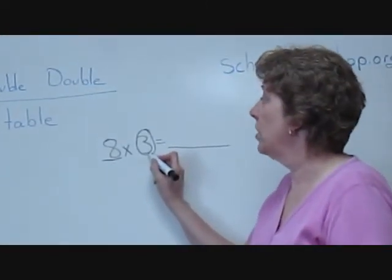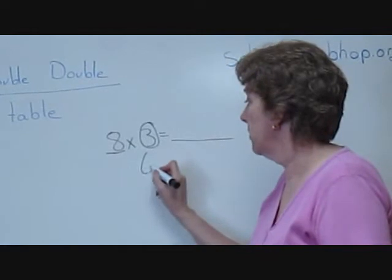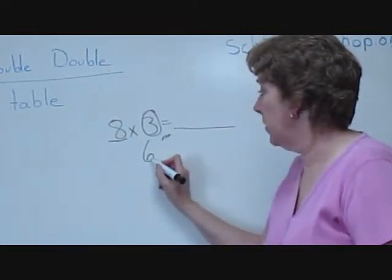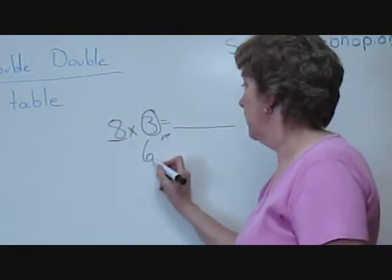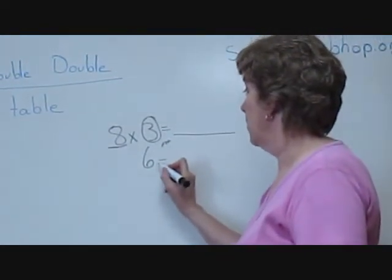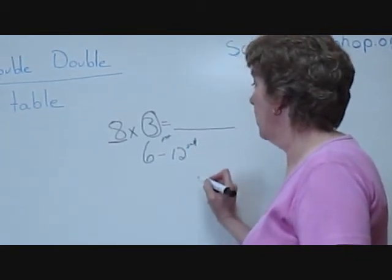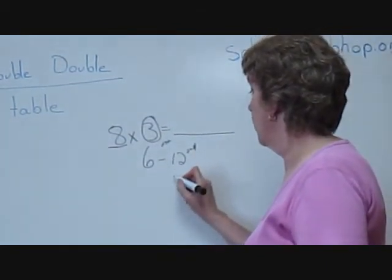We are going to double the three, which is six. That's your first double. You're going to double it a second time, which equals 12. And you're going to double it a third time, which is 24.